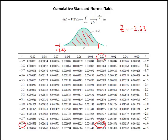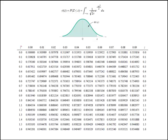The probability we're trying to find is P(z < 1.4). Here are the z values for the positive side of the table. Here's 1.4 — the hundredths place was zero — so this is the area under the normal curve up to 1.4. It's 0.919243. So the area to the left of 1.4 is 0.919243.